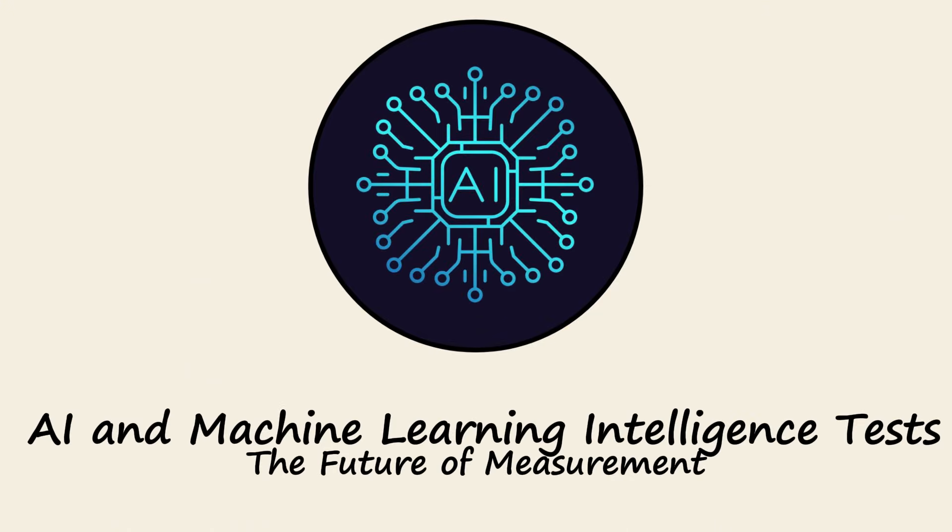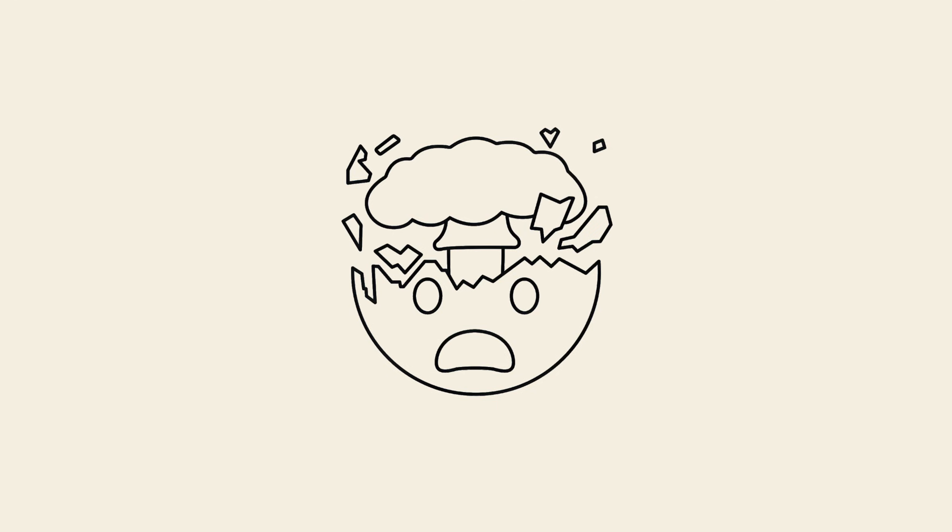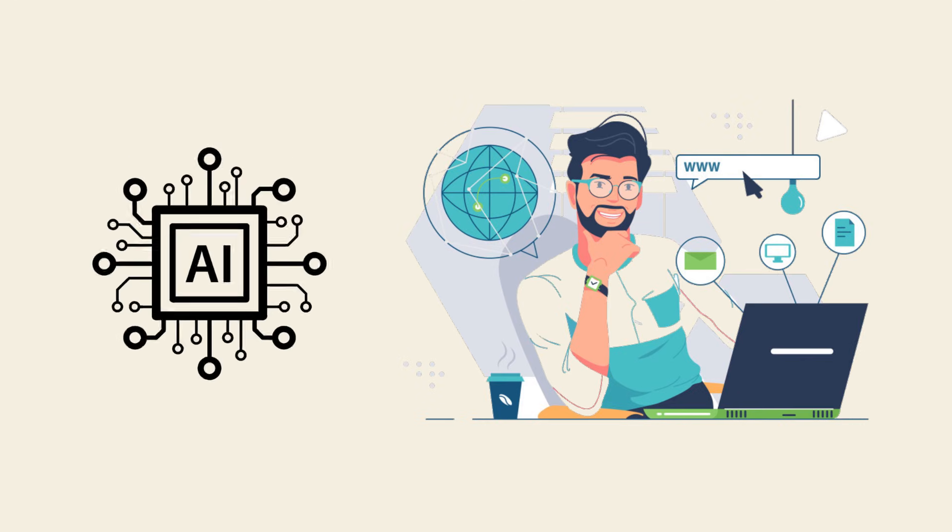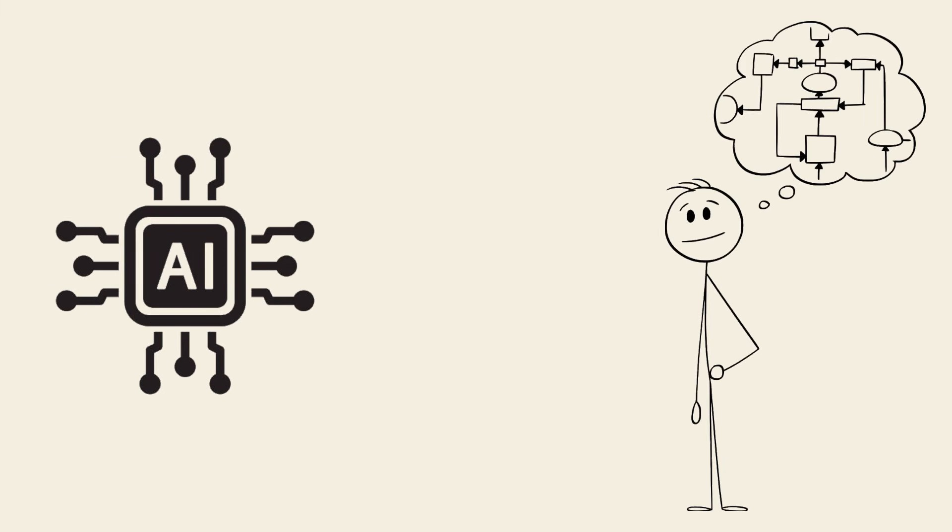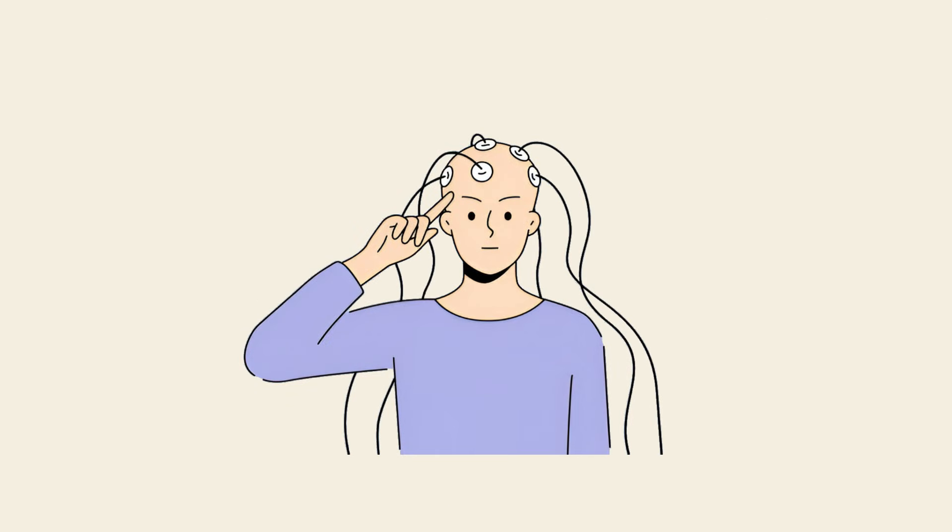AI and machine learning intelligence tests. The future of measurement. Here's where it gets wild. Scientists are now using artificial intelligence to measure intelligence. Instead of relying on written tests, AI can analyze problem-solving patterns, decision-making speed, and even how your brain processes information in real time.